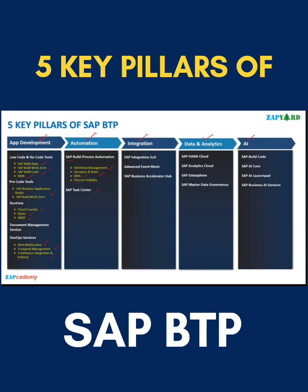On the integration front, SAP has provided Integration Suite, event-based integration, and the SAP Business Network hub. These are the three main platforms SAP has provided where you can build your integrations — like CPI, Cloud Platform Integration.